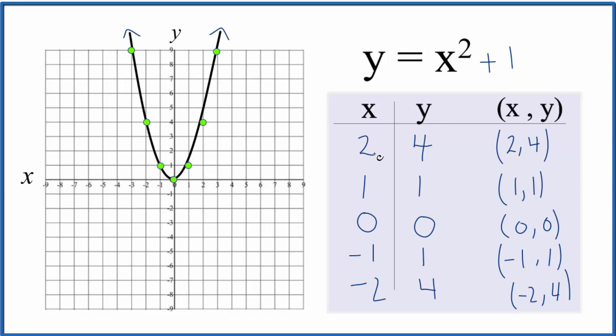So for instance, if we had x is 2, that'd be 2 squared. 2 squared is 4 plus 1, that gives us 5, so we have the point 2 comma 5. If we have 1 squared, that's 1 plus 1, so this becomes 2.